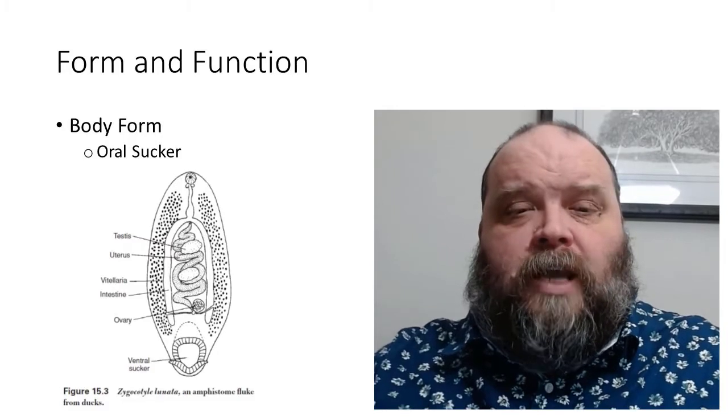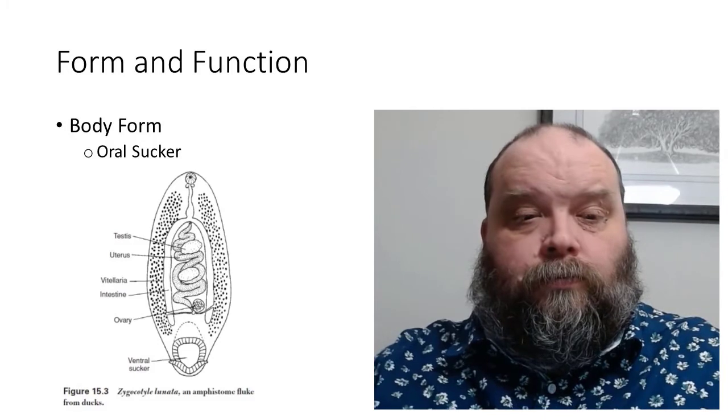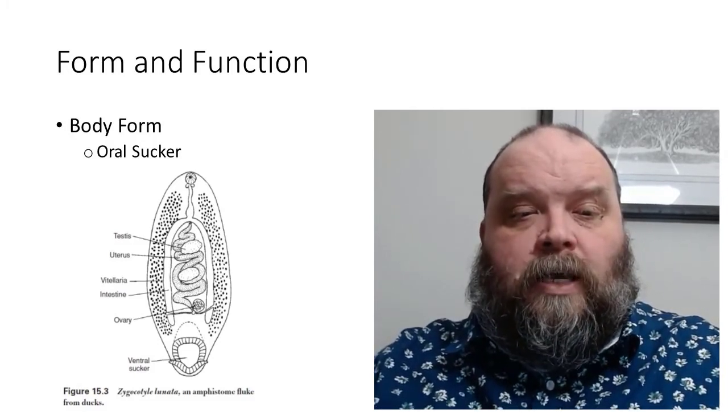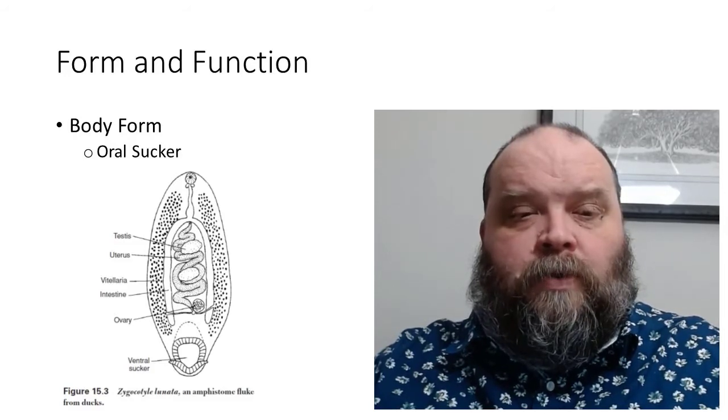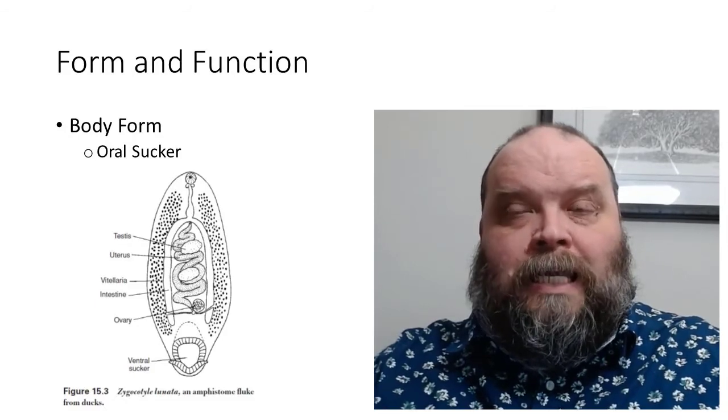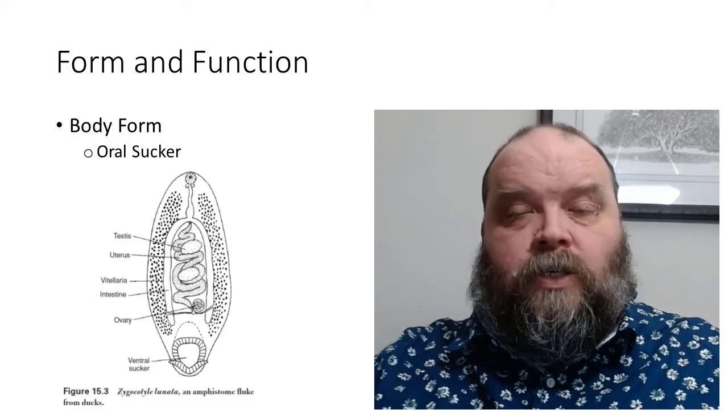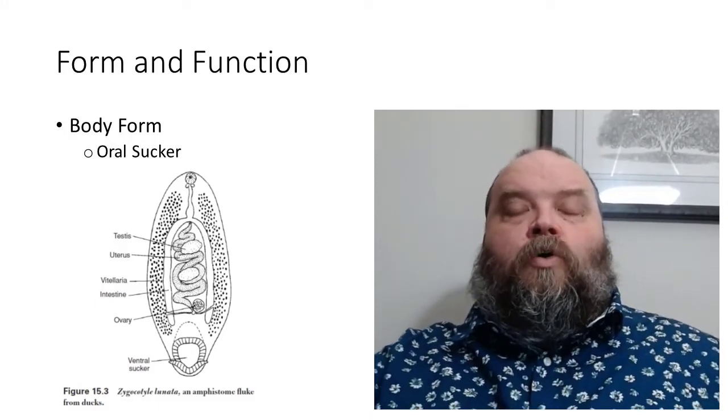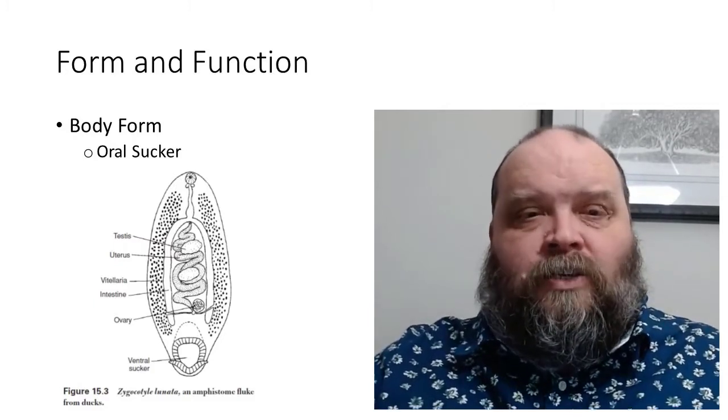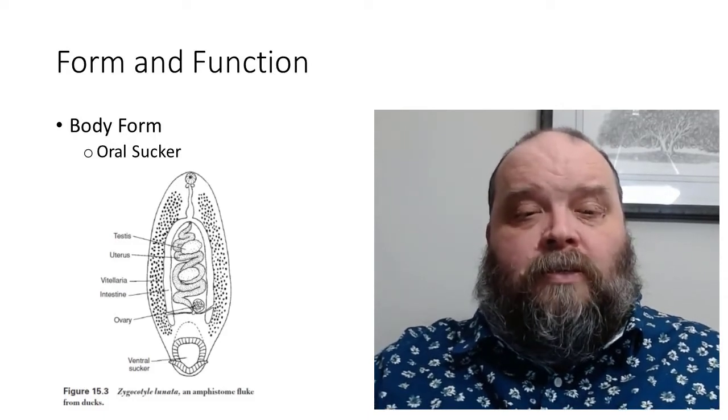Here you see what is referred to as an amphistome, Zygocytes. It has an anterior and all the way down at the posterior tip, a ventral sucker. The anterior sucker is for aiding in pulling stuff into the oral opening. Ventral sucker is for holdfast, hold it in position within whatever organ or tissues it has been able to lodge itself into within its definitive host.